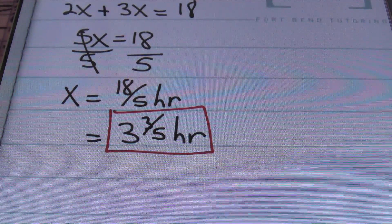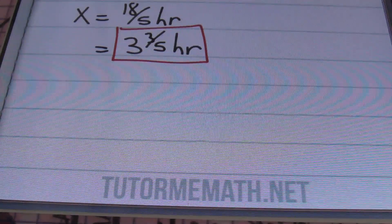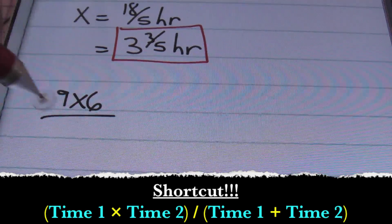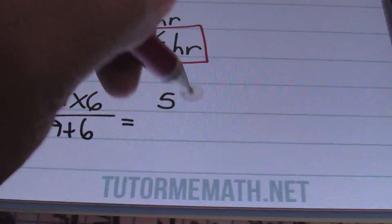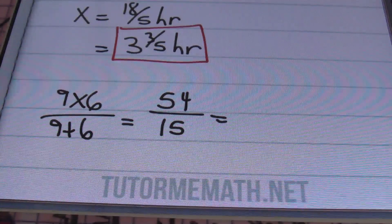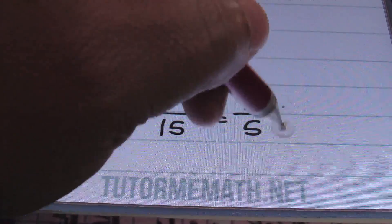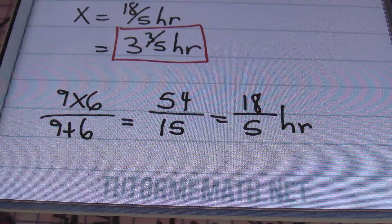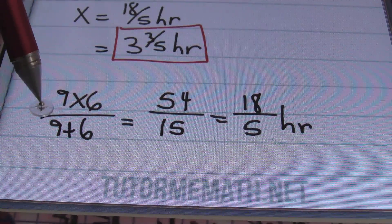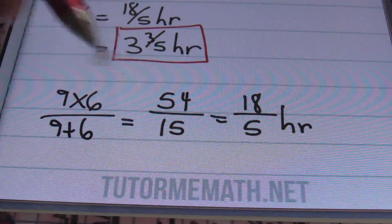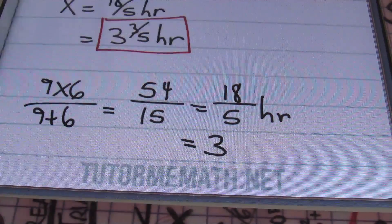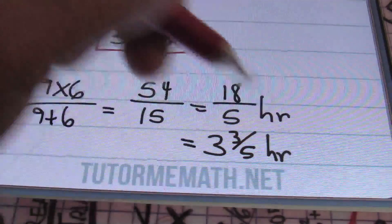I did promise you a shortcut to solve the same type of problem. Take the product of Anna and Gloria's times — 9 times 6 — and divide that by the sum of their times, 9 plus 6. You get 54 divided by 15. Simplifying both numbers by 3, you get 18 fifths — the same answer. So instead of doing the table and solving the equation, just multiply their times together and divide by the sum of their times. You get the same exact result.